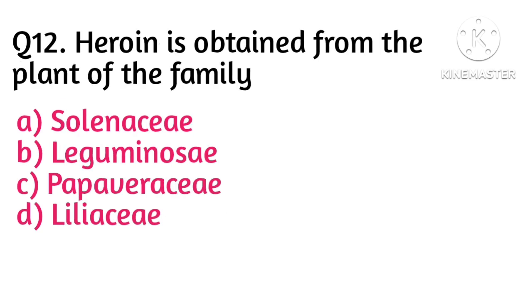Question number 12: heroin is obtained from the plant of the family — option C is correct, that is Papaveraceae. Heroin is obtained by acetylation of morphine. As mentioned earlier, both morphine and heroin are obtained from the opium poppy plant.